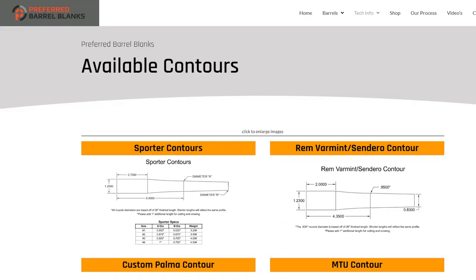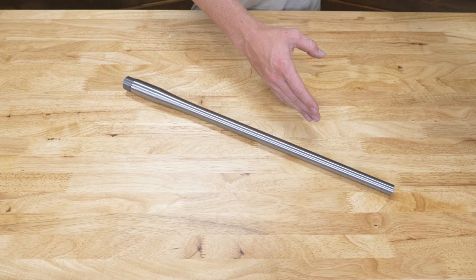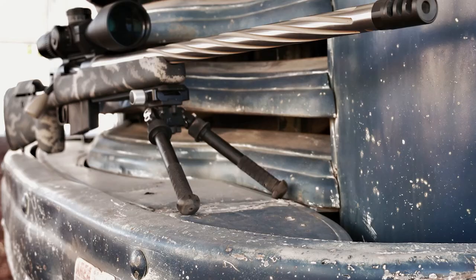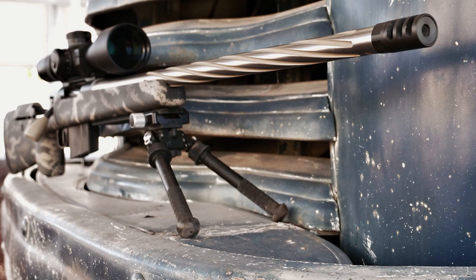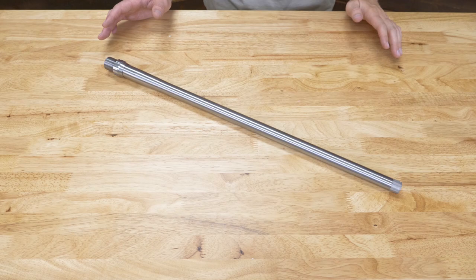All of the specifications are available on our contours page. Muzzle diameters are based off of 26 inch lengths. Shorter lengths will reflect the same profile, meaning that if you order a barrel shorter than 26 inches, the crown will be larger than what is listed on our website. The Sendero contour is actually a sporter variant and is sized between the number 3 and the number 4 sporter barrels.